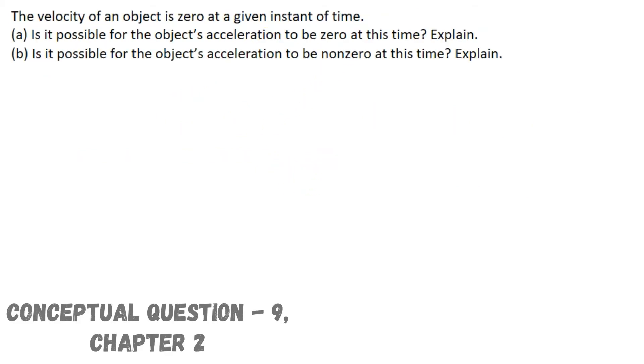Now here in this question we are given with one statement. And the statement is the velocity of an object is zero at a given instant of time. Now for this statement we have to solve these two parts. Case A.